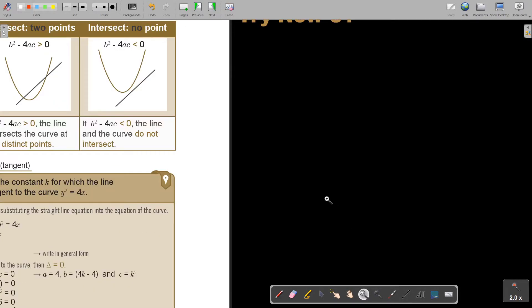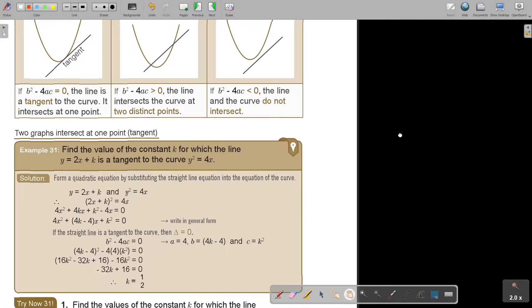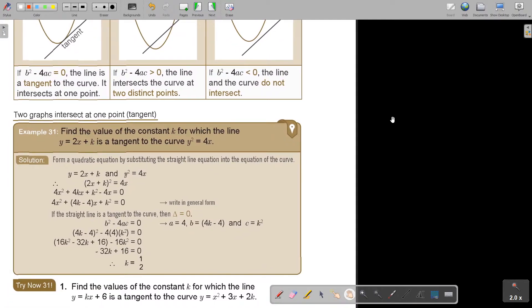Let's look at this example. Find the value of the constant K for which the line is a tangent. Now I'm telling you it's a tangent, so you then know that the discriminant will be zero after you substitute the one into the other equation. Form a quadratic equation by substituting the straight line equation into the equation of the curve. I'm basically just substituting this one in there. Then I simplify.